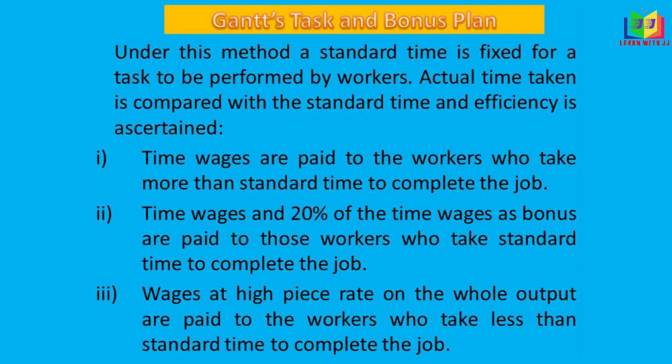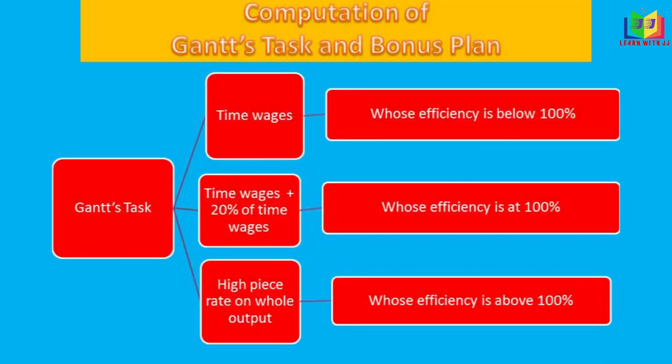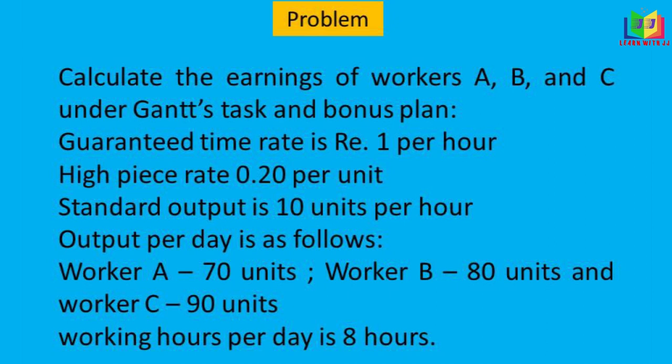In that case, wages are paid at high piece rate based on the output produced by the workers. To summarize: under Gantt's Task and Bonus Plan, time wages are paid to those whose efficiency is below 100%; time wages plus 20% of time wages are paid to those at 100% efficiency; and high piece rate is paid to those whose efficiency is above 100%.